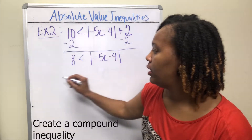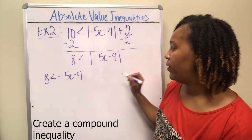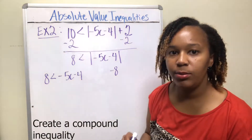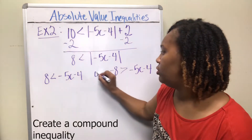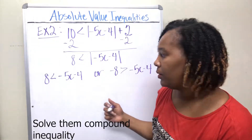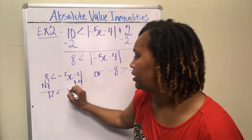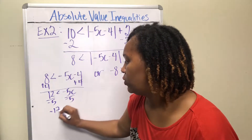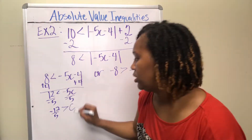For the compound inequality: drop the absolute value bars for the first part. For the second part, change the sign on the number — positive 8 becomes negative 8 — and switch the direction of the inequality symbol. Join them with 'or'. Solving the first: add 4 to both sides to get 12 < −5c, then divide by −5 and flip the symbol, giving c < −12/5.